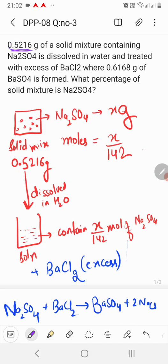0.5216 gram of a solid mixture is given which is containing Na2SO4 and the percentage of Na2SO4 has to be calculated.